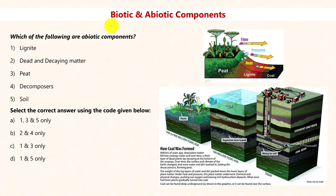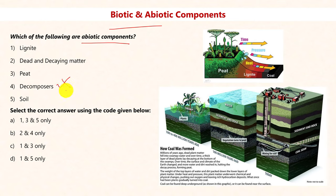Let us look at a question based on biotic and abiotic components. Which of the following are abiotic components? The options are lignite, dead matter, peat, decomposers, and soil. The easiest option to address is decomposers — we know that decomposers are also called detritivores, and detritivores are biotic components, so we can eliminate that option. The next easiest is soil, which in its purest form is an abiotic component, so the answer must include option 5, meaning the answer is between A and D.